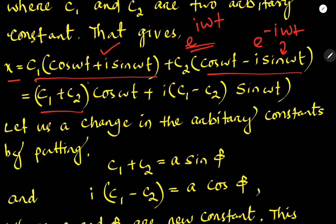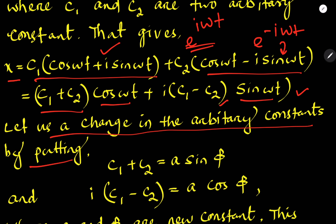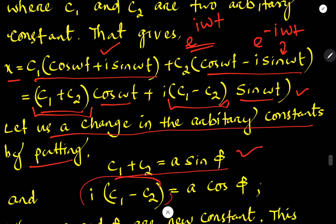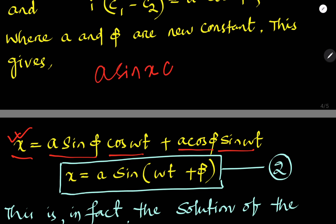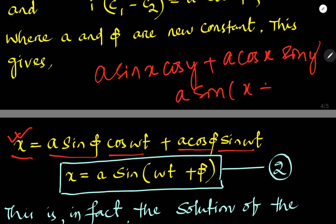Taking c1 plus c2 as common for the cosine terms and i times (c1 minus c2) for the sine terms, we change the arbitrary constants by putting c1 plus c2 equal to A sine phi and i times (c1 minus c2) equal to A cos phi. Substituting these values gives x equal to A sine phi times cos omega t plus A cos phi times sine omega t.